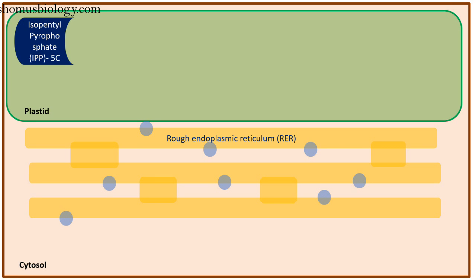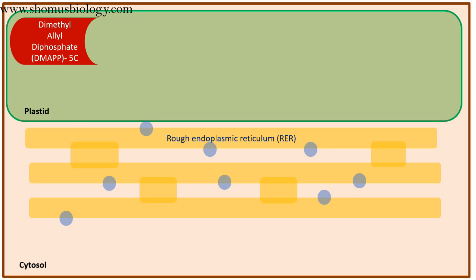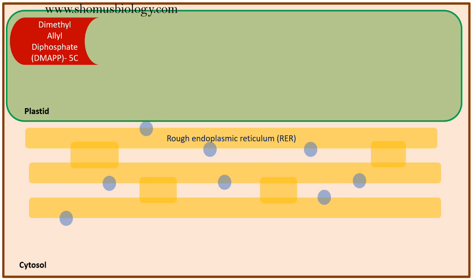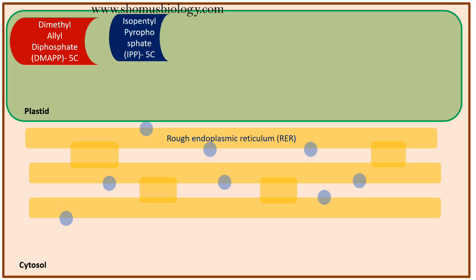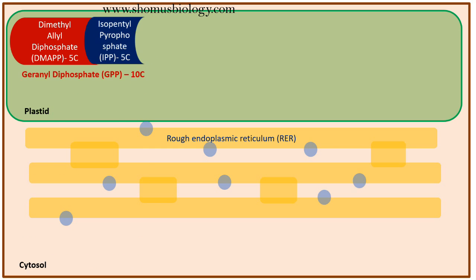We start with the precursor isopentyl pyrophosphate (IPP), which is a 5-carbon compound, and this is modified into dimethylallyl diphosphate (DMAPP), which is also a 5-carbon compound. IPP and DMAPP associate and undergo polymerization, increasing the carbon count. IPP associates with DMAPP to form the 10-carbon compound geranyl diphosphate (GPP).